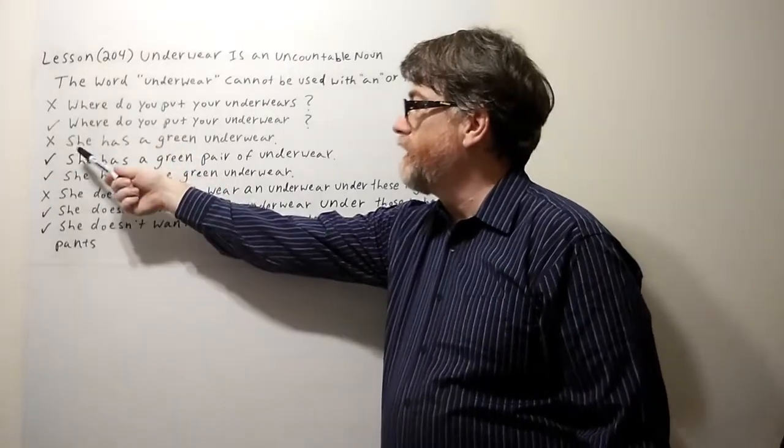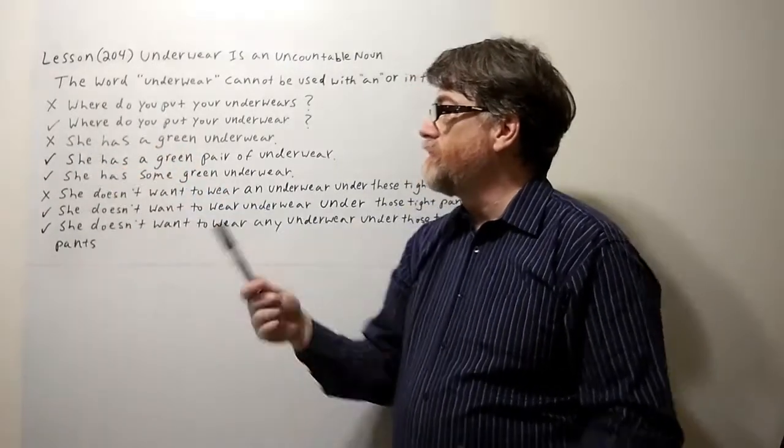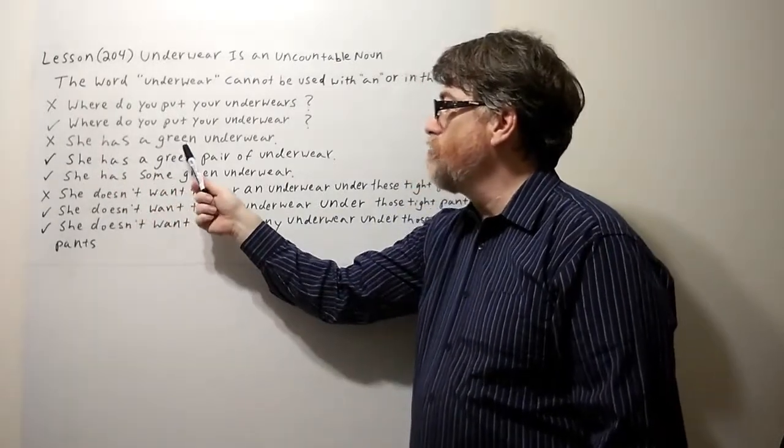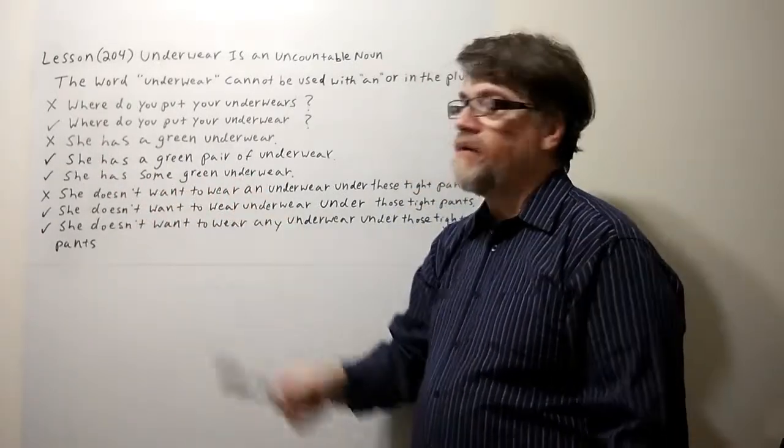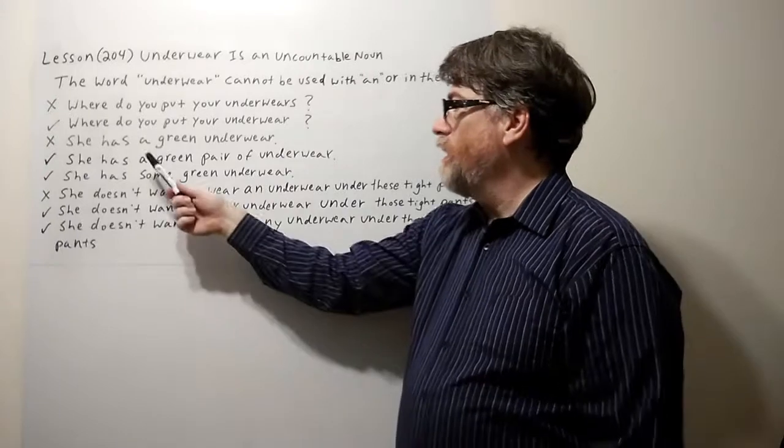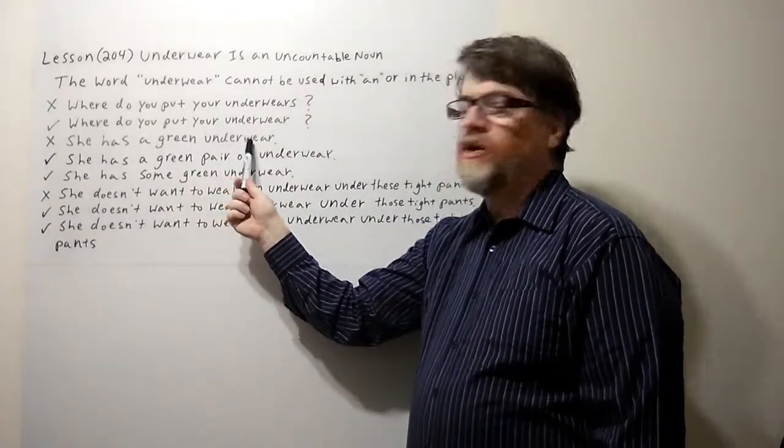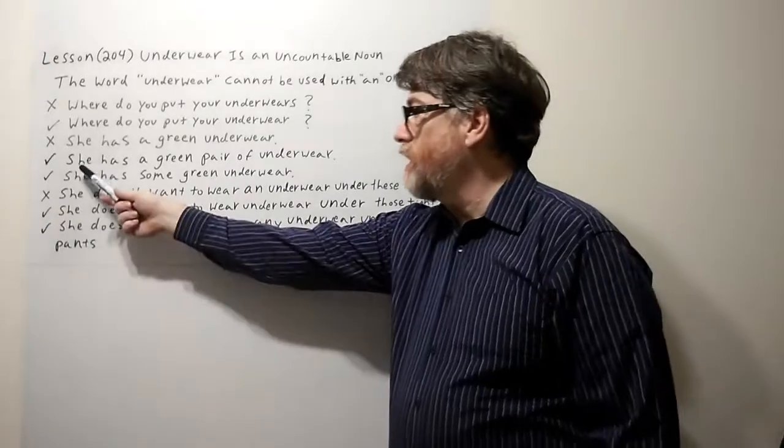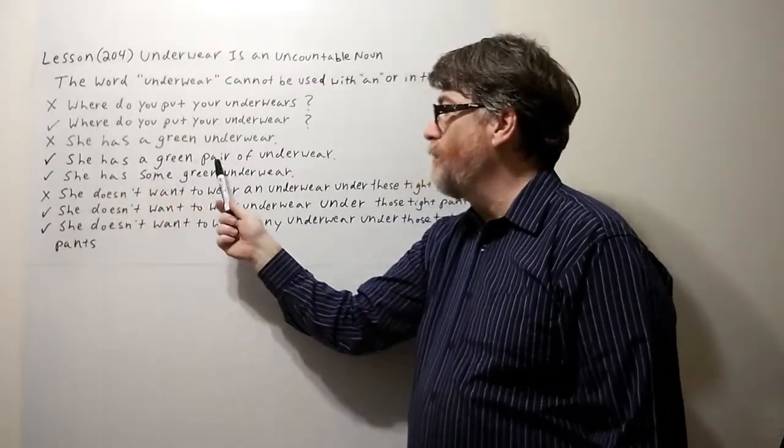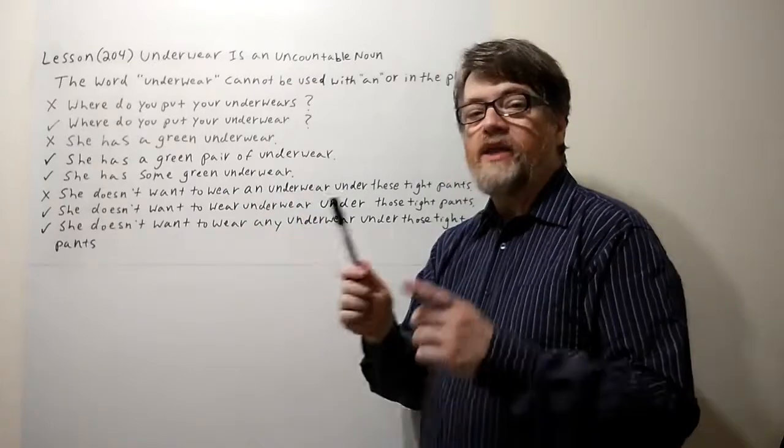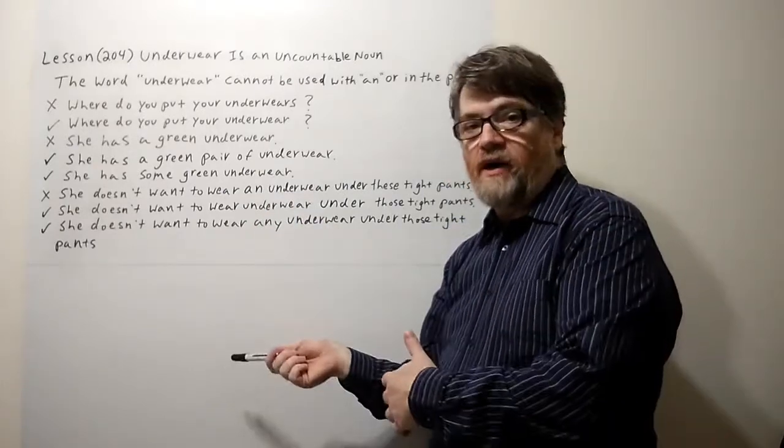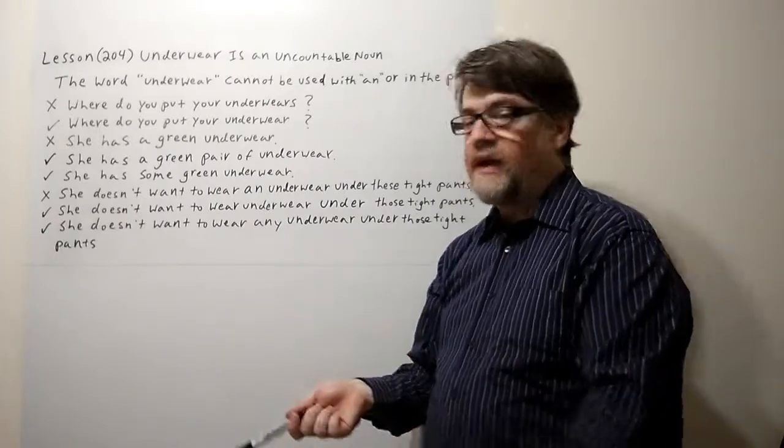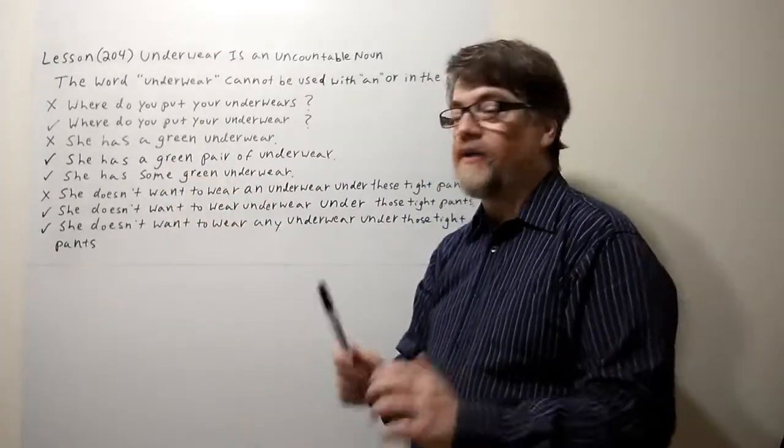Let's look at the next example. Again, with the X this is wrong: She has a green underwear. You shouldn't be using a or an if underwear is the noun. But with the check here, you could say she has a green pair of underwear. The word pair can make underwear countable, so somebody could have a pair of underwear, but they can't just have a green underwear by itself.